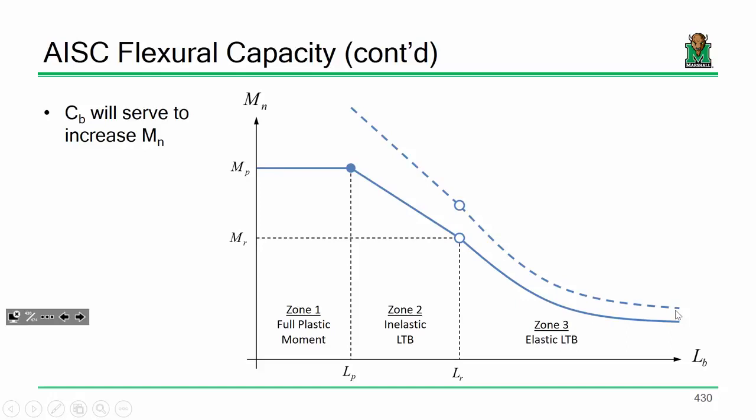So C sub B, for instance, if C sub B is, say, 1.5, it's going to take your capacity and increase it 50%. However, regardless of what C sub B does, capacity is always limited to your plastic moment. You cannot exceed M sub P. So your curve is always going to be cut off at M sub P.